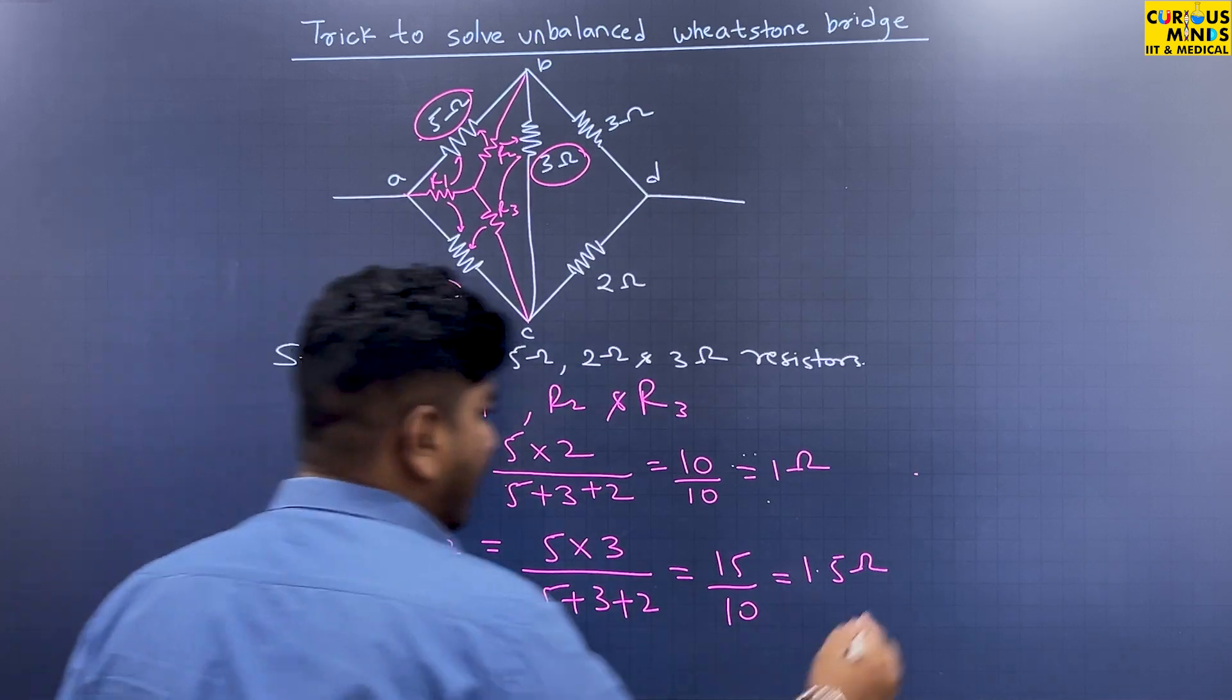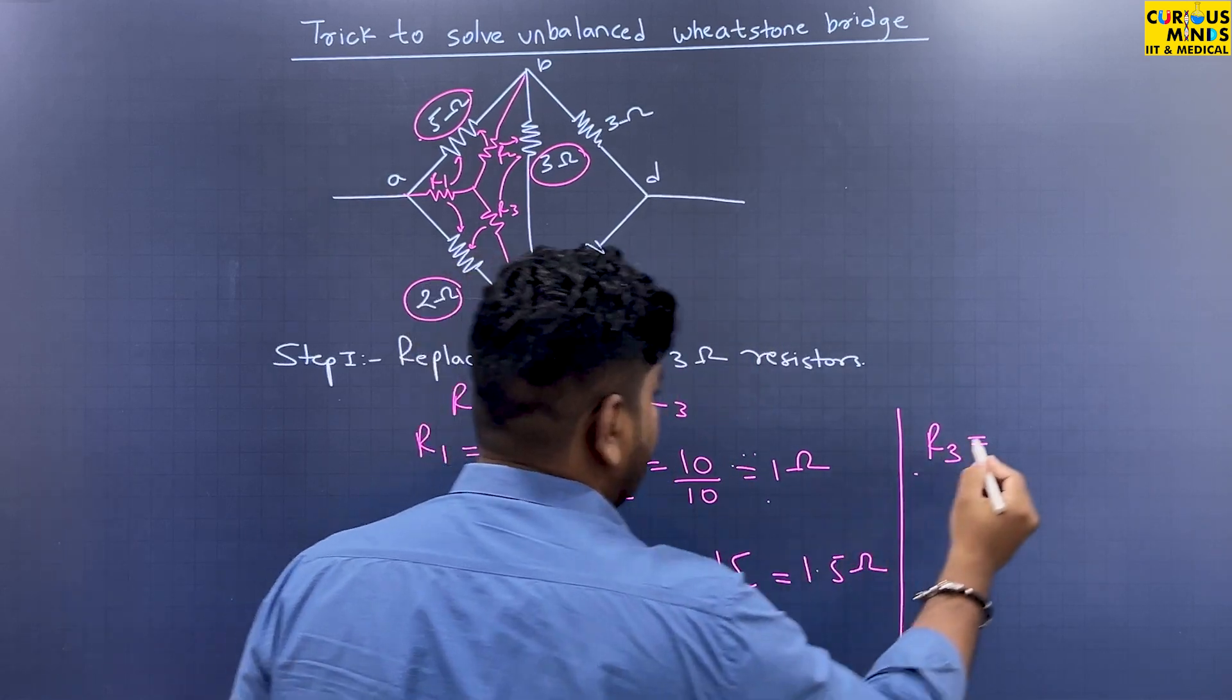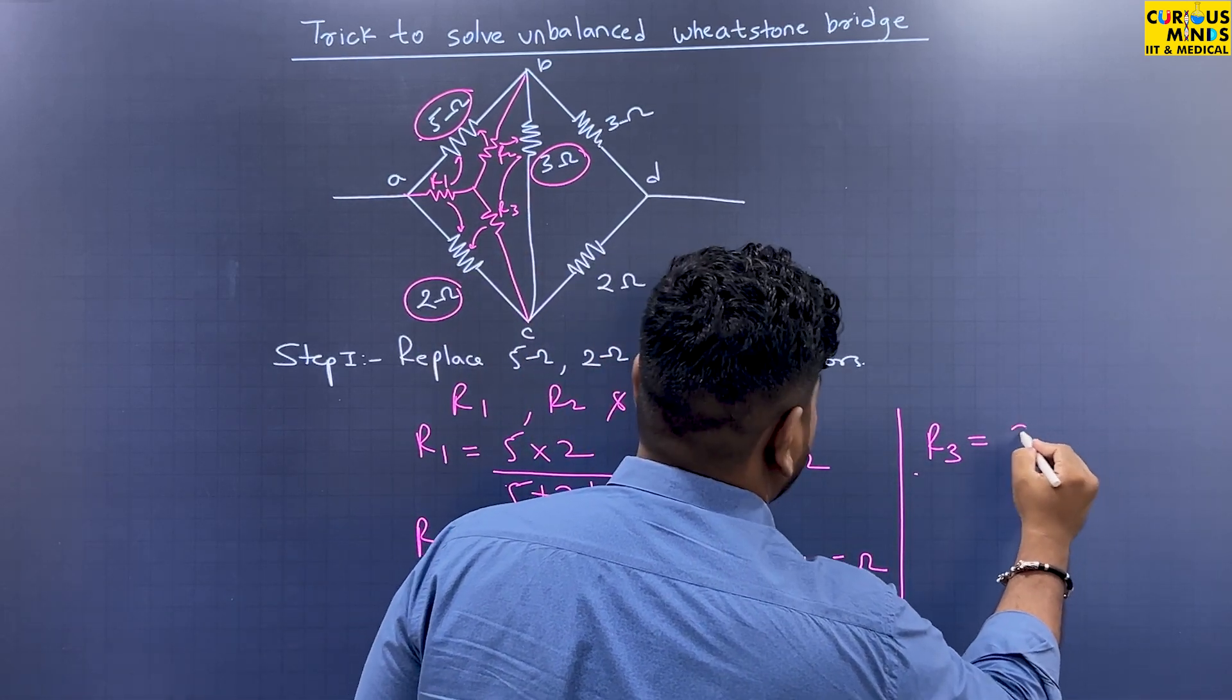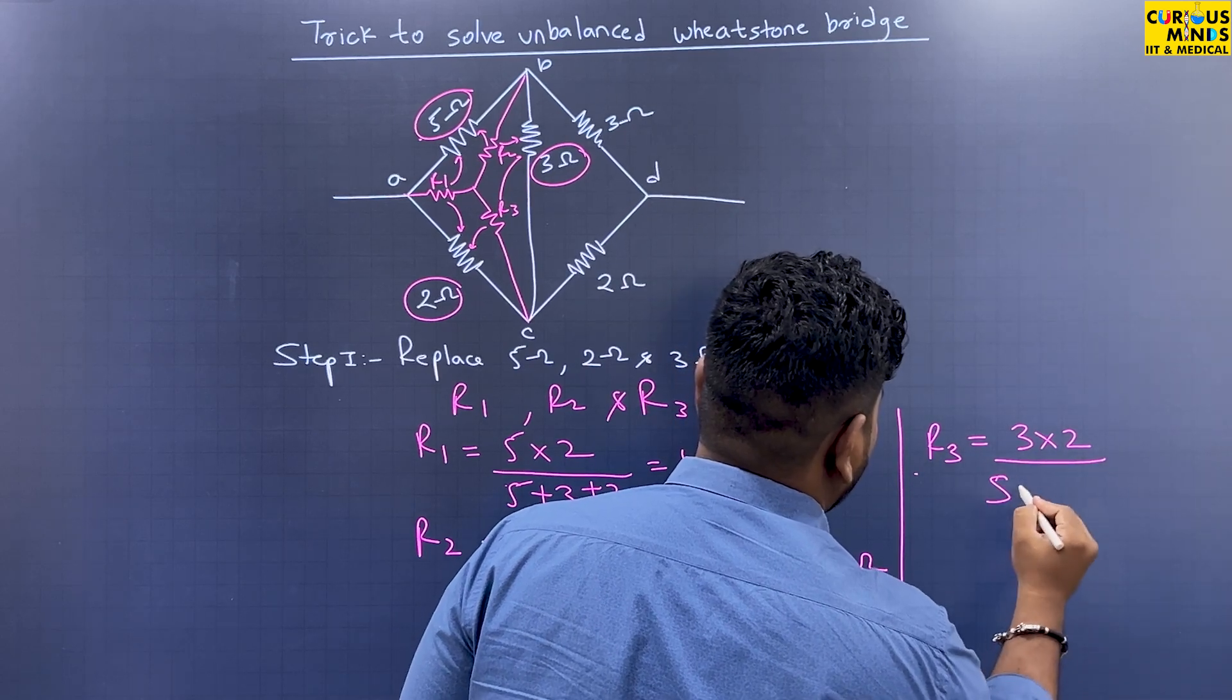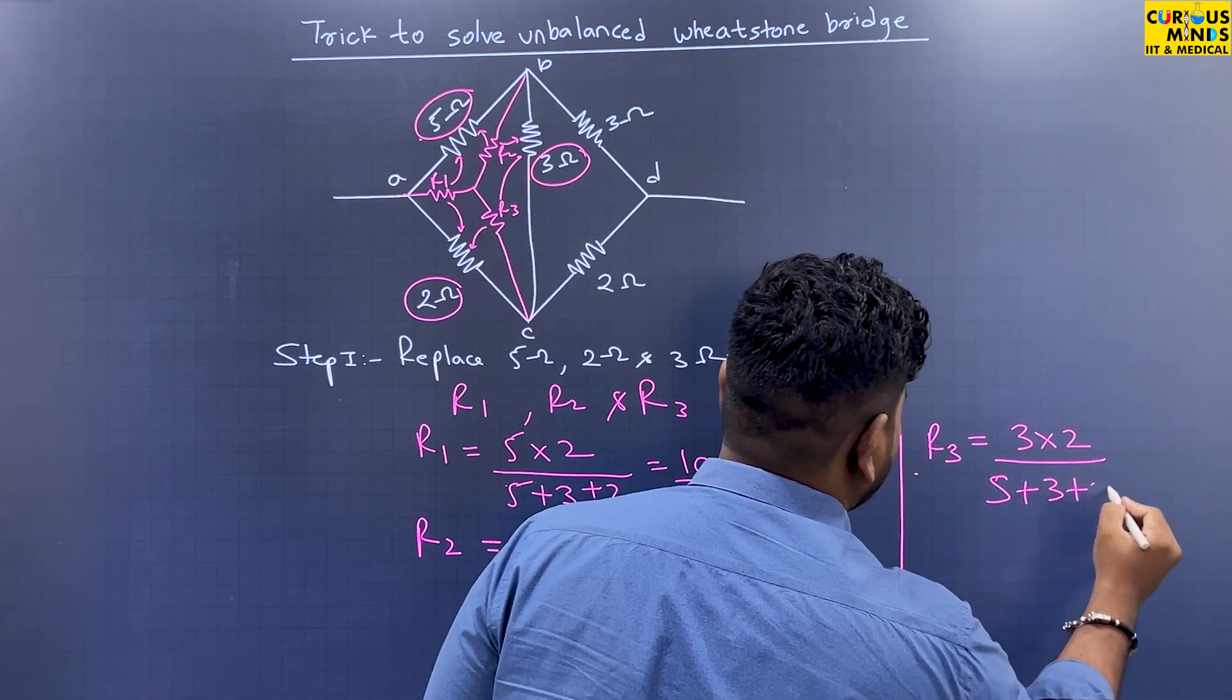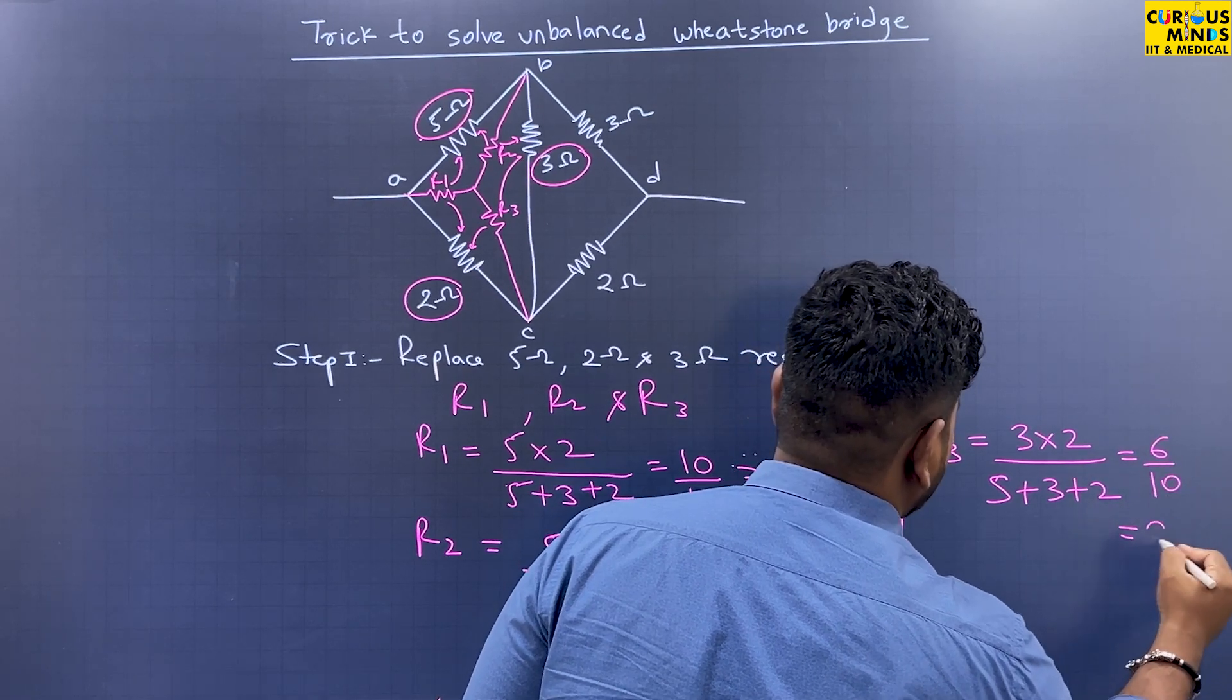Similarly, R3 is 3 into 2 upon 5 plus 3 plus 2, which is 6 by 10, which is 0.6 ohms.